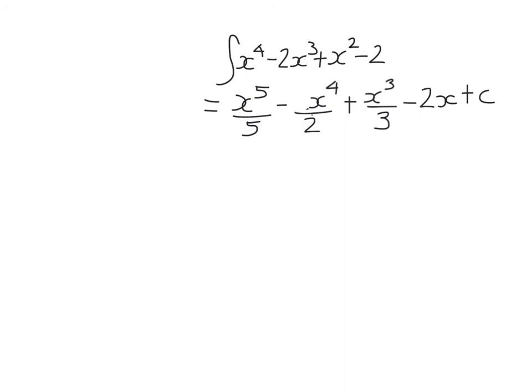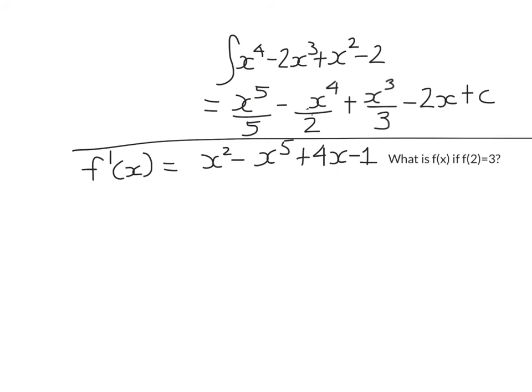Now let's look at an example where we find the antiderivative and also find the constant. I'm given the derivative function and I want to find the original function f(x), and this time I'm told f(2) equals 3. This information is enough that I'll be able to find the value of the constant. If you're told a point through which the original function passes, you'll be able to find the constant.